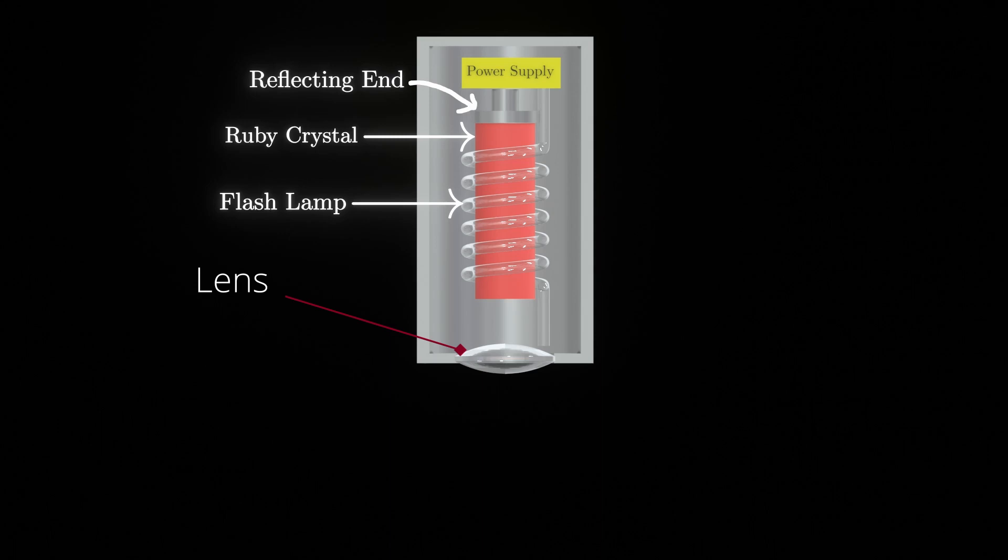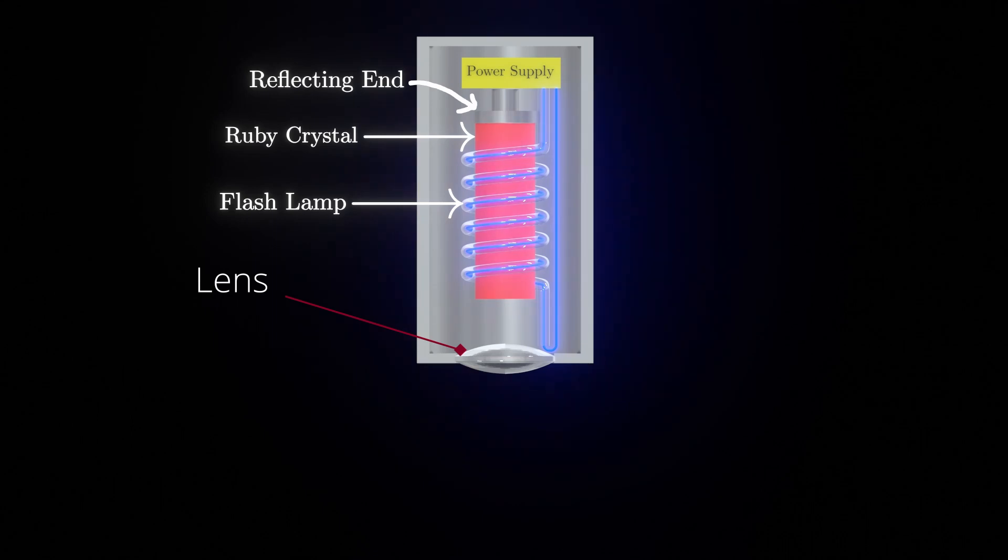So let's see how it works. The xenon lamp is fired by discharging a large capacitor through electric power of 250 to 1000 volts. This power is basically coming from the power supply.